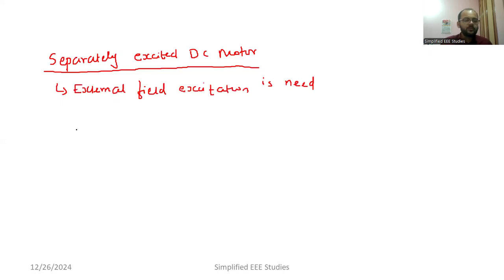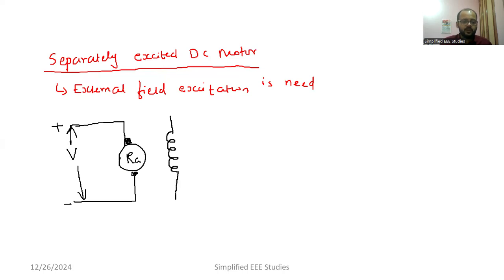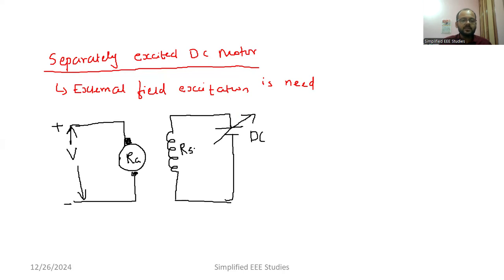First, we need to draw the armature. We have the brush — draw the brush position. The armature offers a certain resistance known as armature resistance. We are going to provide the electrical energy input. Mark positive and negative because it is a DC motor. Now we are going to draw the field. The excitation will be given externally — we need to provide a separate excitation circuit. This is my field which has the resistance of RSH.